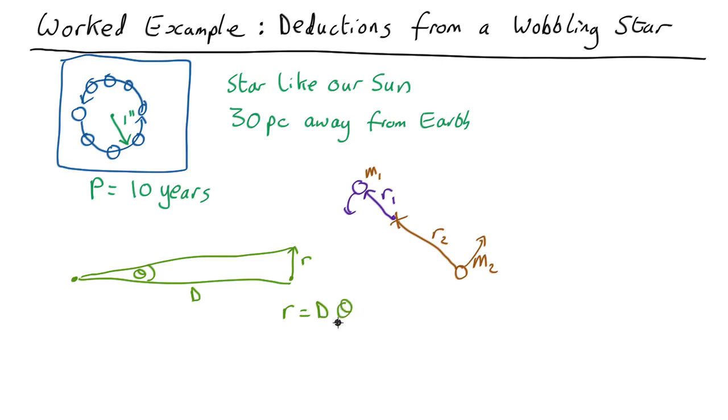Now in our case we know theta which is one arc second. We know d which is 30 parsecs. So what we want to work out is R, what is the actual physical radius of the orbit.